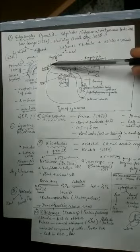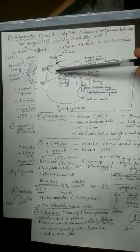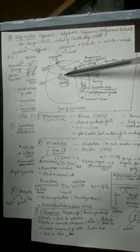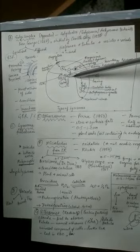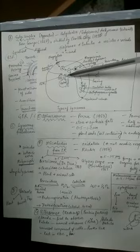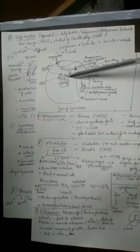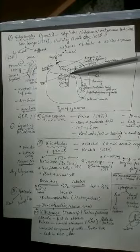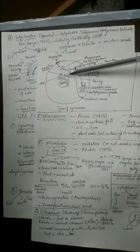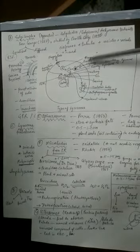This vesicle will go and fuse with the cis phase of the golgi complex, undergo final modification, become an active enzyme, and come out in the form of the golgi vacuole. Now this golgi vacuole is going to fuse with...